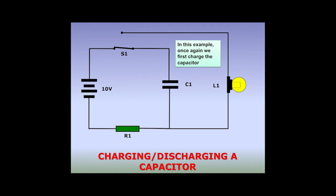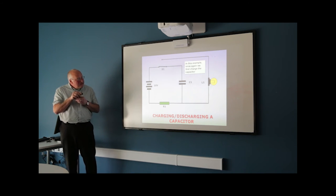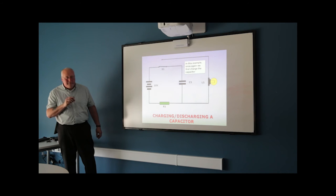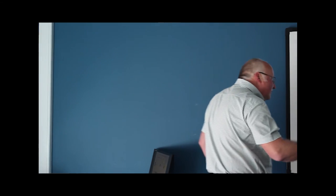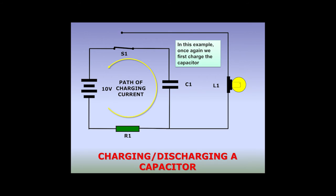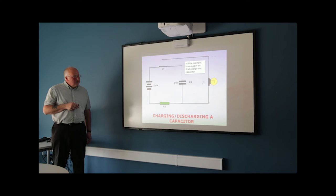Now we look at a second circuit — a DC supply, switch, and capacitor, but this time connected to an external circuit containing a light bulb. With S1 closed, electrons leave one plate, are attracted to the positive terminal of the battery, chemical action forces them onto the cathode, and the cathode repels electrons onto the other capacitor plate. It continues charging until the charge on the capacitor equals the battery voltage — 10 volts — at which point no current flows.